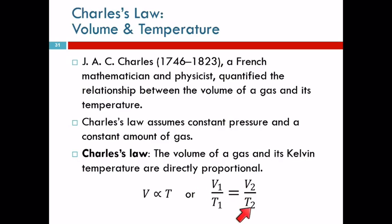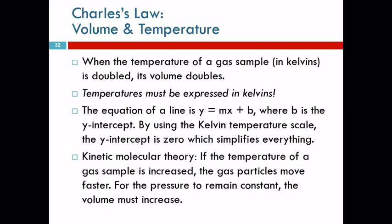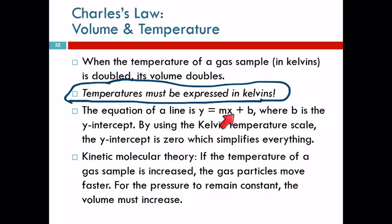Another way to write this is V1 over T1 equals V2 over T2. So we see that when the temperature in Kelvins is doubled, its volume doubles. You have to use Kelvins, and that's because of the relationship between the Kelvin and Celsius scale. It's an additive one. Kelvin is Celsius plus 273. It doesn't cancel out. Just remember, you have to use Kelvins. The reason we use Kelvins is because of the equation of the line thing. When we use the Kelvin scale, this b becomes zero.